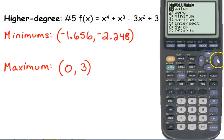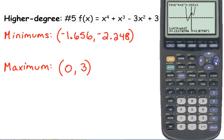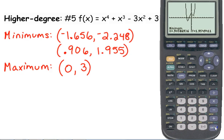I don't know if I had gotten a little bit closer with my bounds if maybe it would have given me three or zero. I'm not sure. And then we've got one more though. We've got a minimum on the right side, so we need to calculate one more minimum. Move my cursor just a little bit. And our other minimum occurs at (0.906, 1.955). So those are my three extrema.